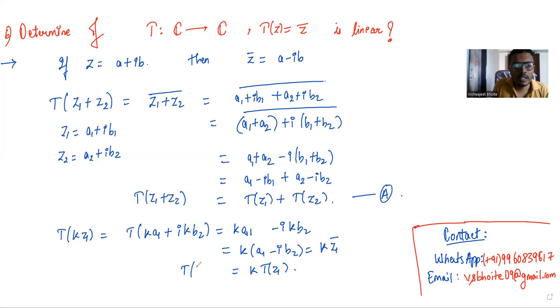We have T of kz1 equals k times T of z1. Let's call this property 2. By properties 1 and 2, T is linear.